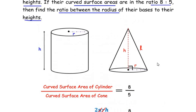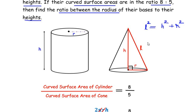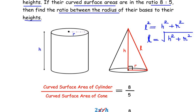Now let us find the relationship between the slant height, perpendicular height, and radius, since the question asks for the ratio of radius to height, not slant height. Looking at the cone, the perpendicular height, the radius, and the slant height form a right-angled triangle, with l acting as the hypotenuse. Using the Pythagoras theorem: l² = h² + r², so l = √(h² + r²).